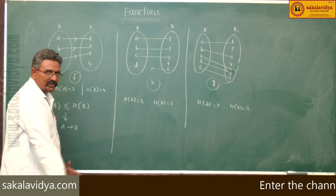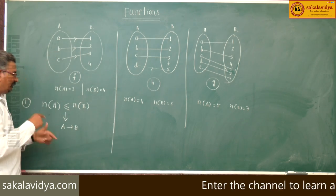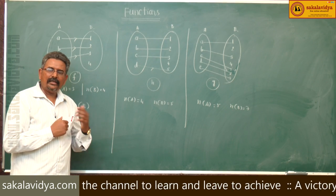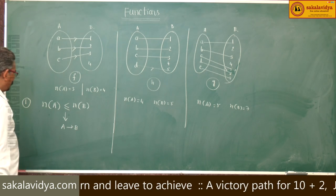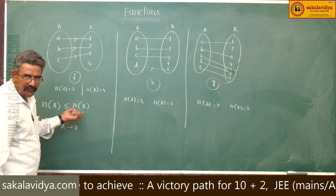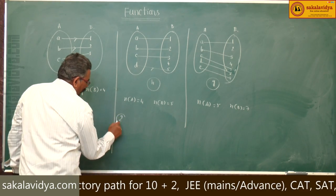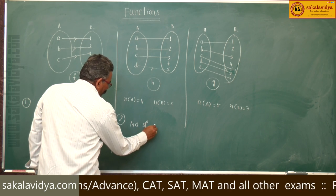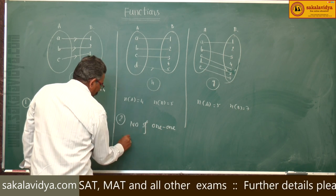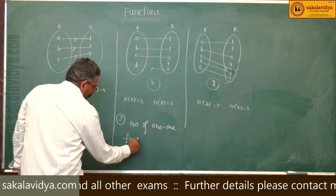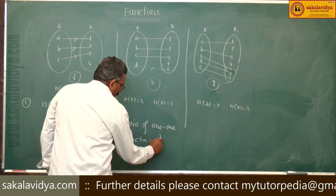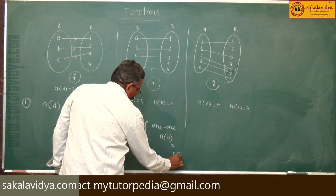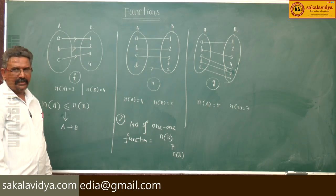Now let us concentrate: how many number of injections or one-to-one functions can be formed from A to B, providing the same condition n(A) less than or equal to n(B)? For that, second point: number of one-to-one functions or injections equals n(B) P n(A).